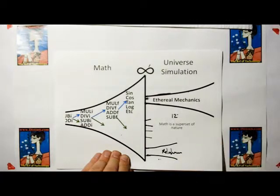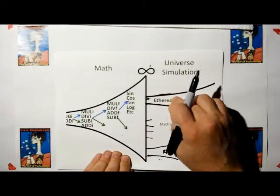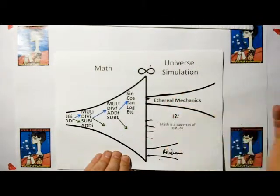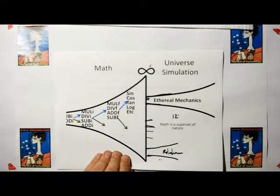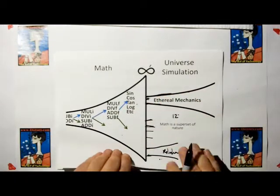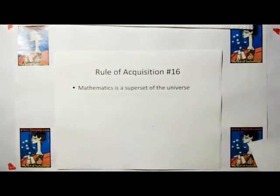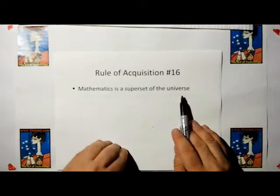That's why I say that just because you can mathematically derive something does not mean it appears in the universe. Because you can come up with a universe that's got fractional dimensions, which may have nothing to do with our universe. But, anything we observe in the universe should be mathematically definable. And this rule of acquisition number 16 is mathematics is a superset of the universe.